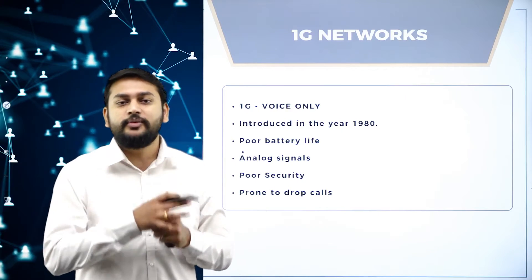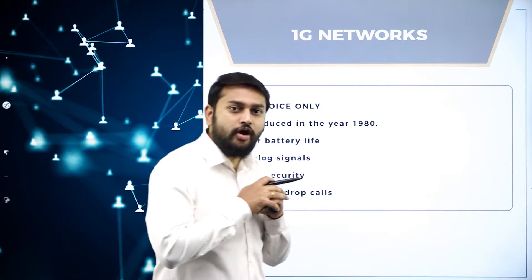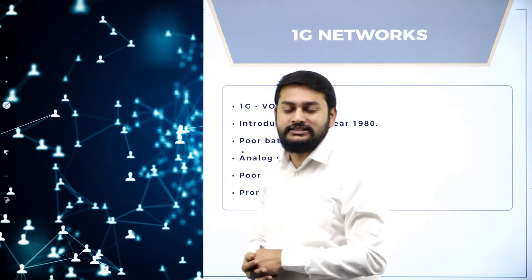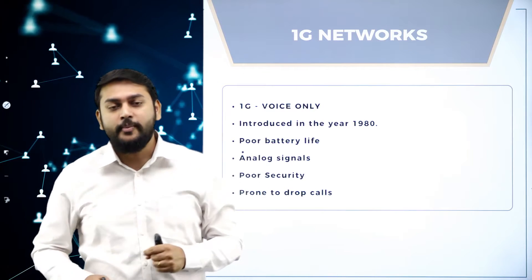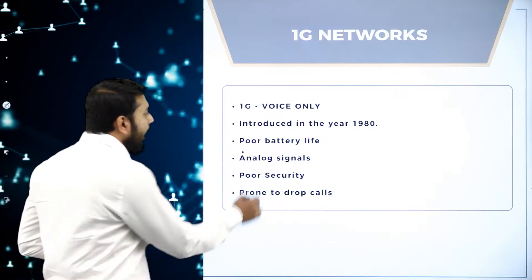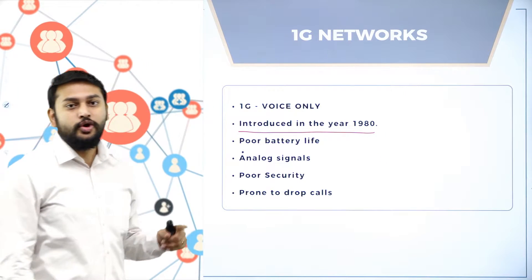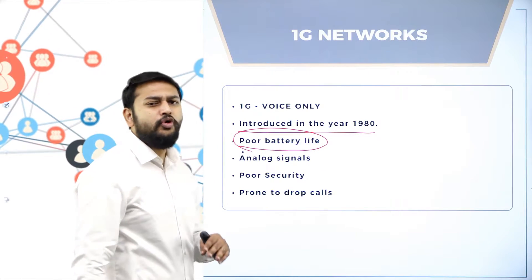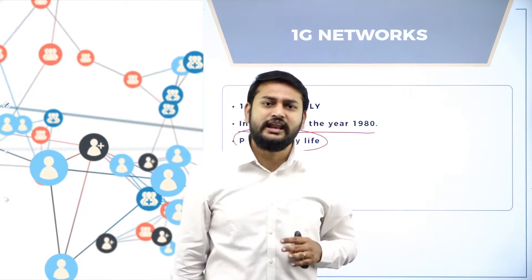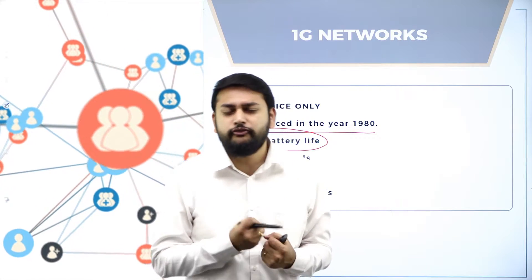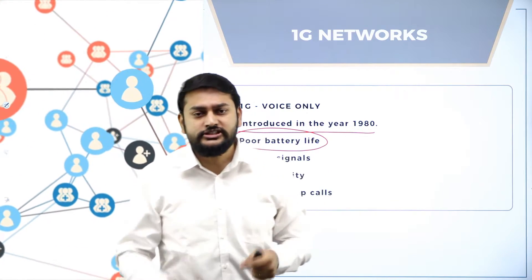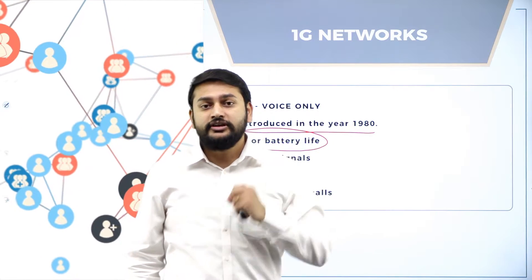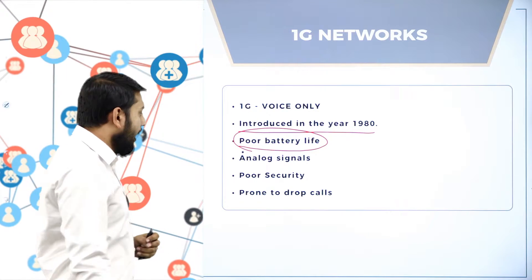In 1G, we were able to transmit only voice — we were not able to send text data. That was the major drawback. It was introduced in the 1980s. It had poor battery life, consuming a lot of power. We were using analog technology in the first generation.